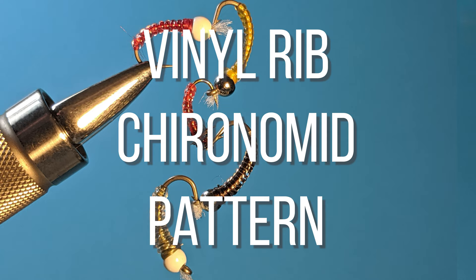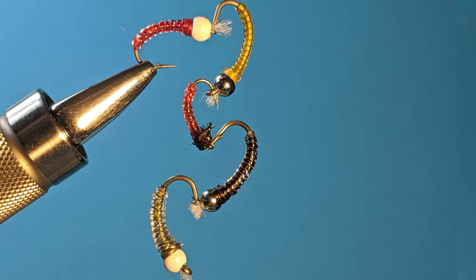Hello and welcome to Fish and Forage. My name is Zach and today we are tying a vinyl rib bead-headed chironomid. These flies emulate a range of larvae and are incredibly versatile in terms of color and style and size. Today we're going to be doing a pretty basic red chironomid with a white bead head.